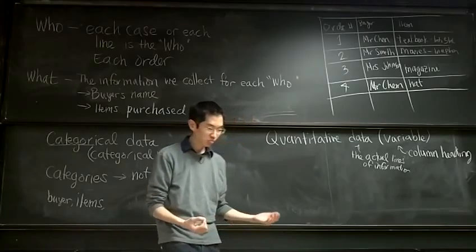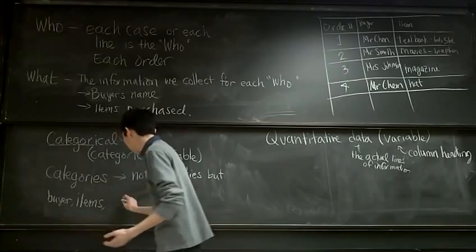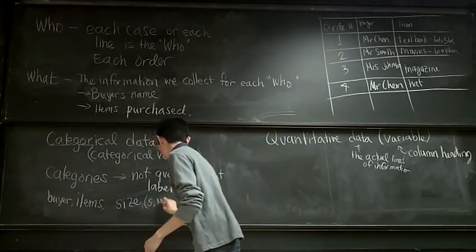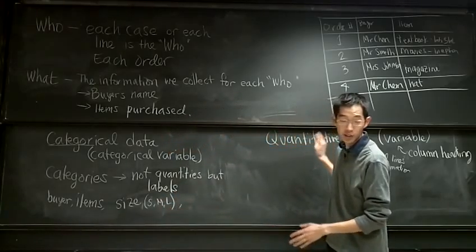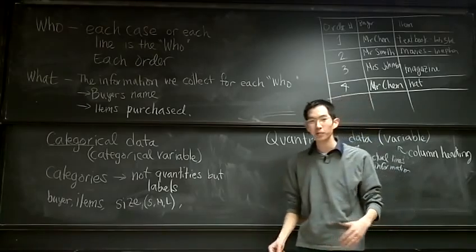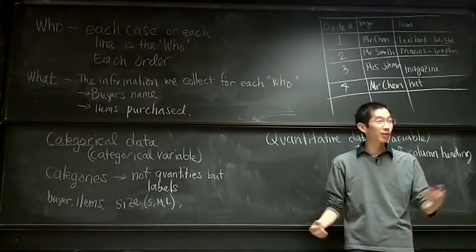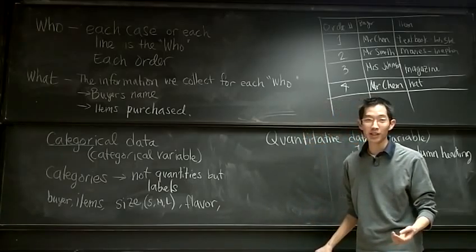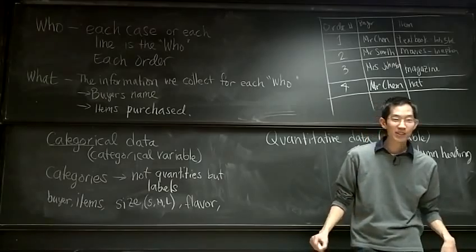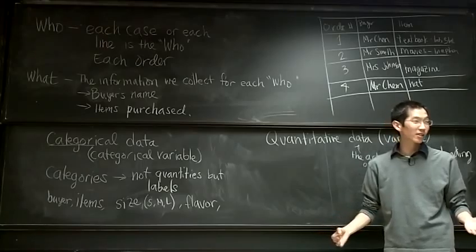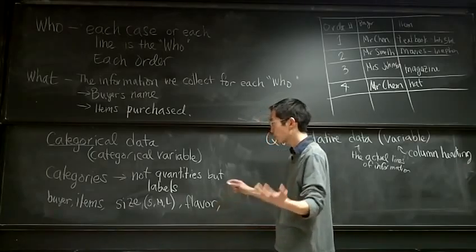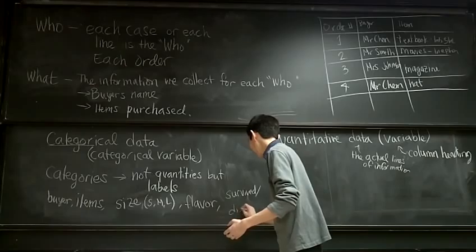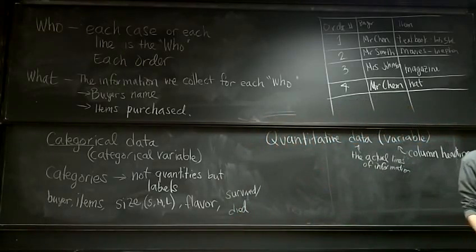Other things could also be categories. For example, shirt size — small, medium, large — size is a category. If we're talking about candies like Jolly Ranchers, the flavor would be a categorical variable. We're also going to look at slightly morbid data about the Titanic — whether they survived or did not survive the accident is also a categorical variable, because we're putting them into categories: survived or died.